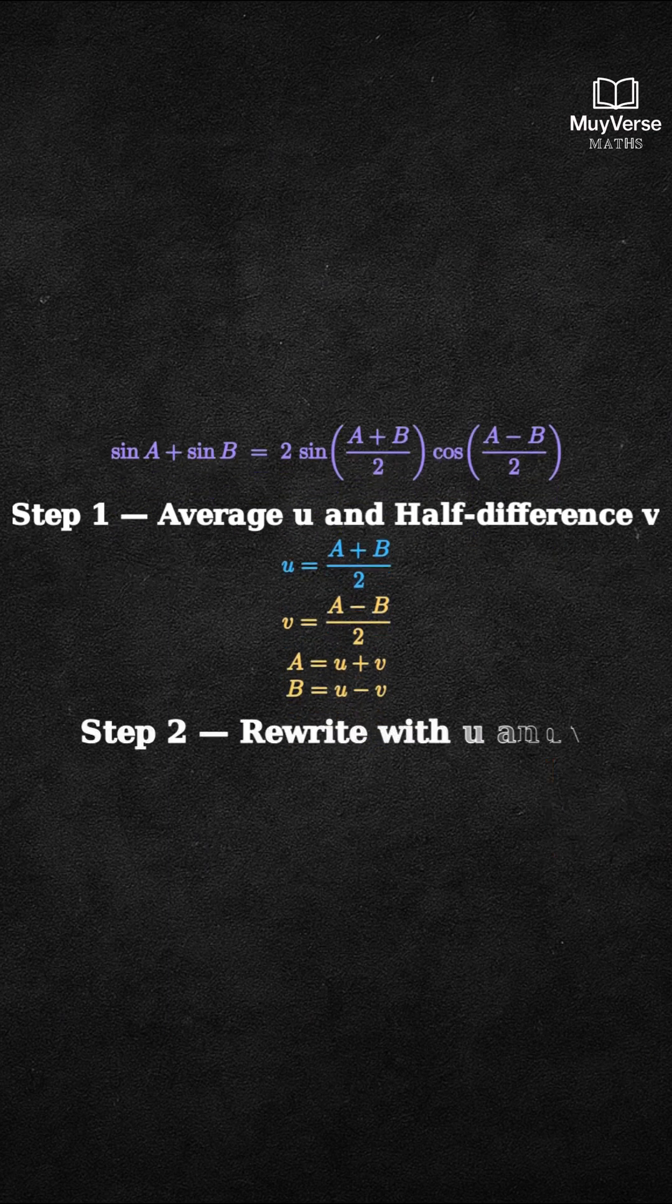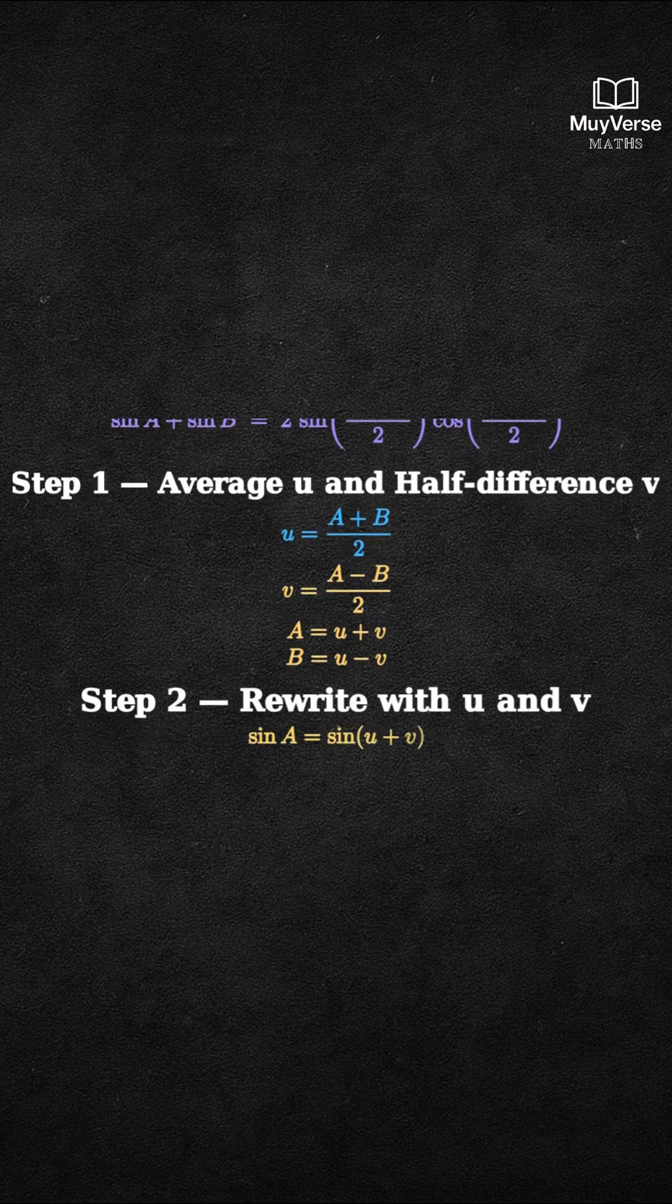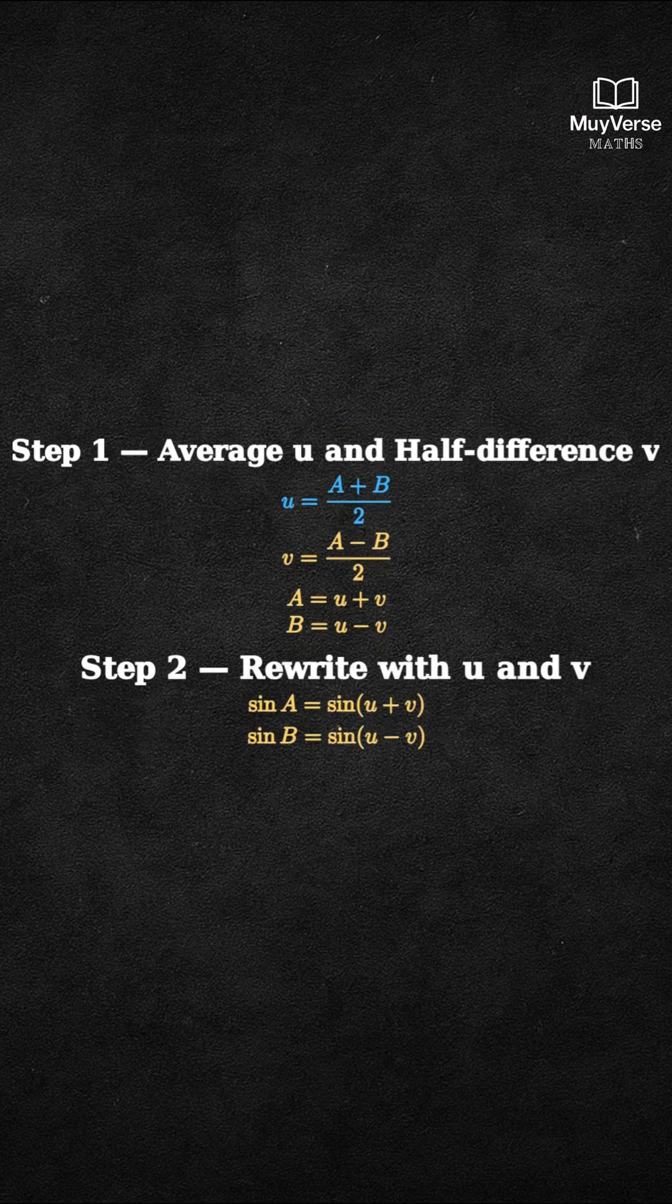Step 2. Rewrite the sines using U and V. Sine A becomes sine of U plus V, and sine B becomes sine of U minus V.